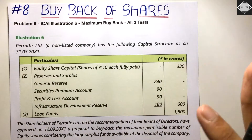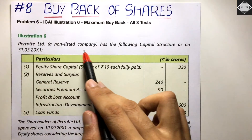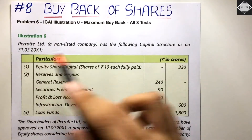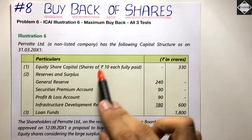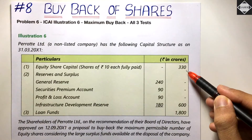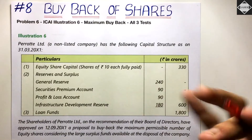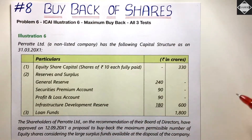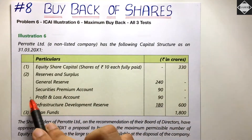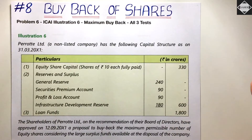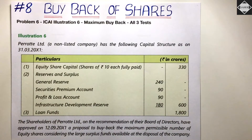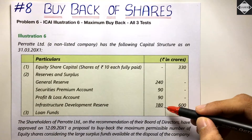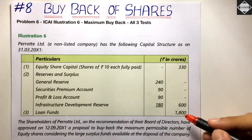Let's go through the question. Perot Limited, a non-listed company, has the following capital structure as on 31st March 2021. Equity share capital — shares of Rs. 10 each, fully paid; 10 is the face value and 330 crores is the total capital. So the number of shares is 330 divided by 10, which equals 33 crore shares. Reserves and surplus: General Reserve 240 crores (a free reserve), Securities Premium Account 90 crores (also a free reserve under Section 68), Profit and Loss Account balance 90 crores. Infrastructure Development Reserve 180 crores — this is not a free reserve. Loan funds (debt) are 1800 crores.